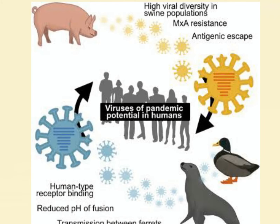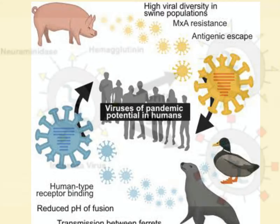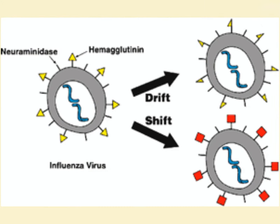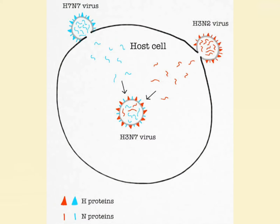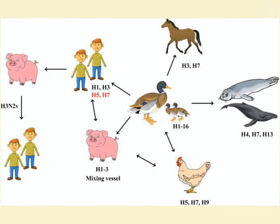These surface proteins determine what species the virus can infect. However, influenza A virus can undergo antigenic shift, where two strains of virus mix their genome to create a new virus with a different set of H and N proteins. This allows the new virus to infect different species from the original strain.